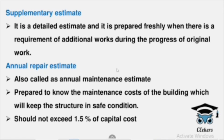Next is the Supplementary Estimate. Supplementary means additional. When work is in progress and we additionally need any work not included in the initial Detailed Estimate, we prepare a Supplementary Estimate. For example, if there is a Retaining Wall in a structure that was not included in the original Detailed Estimate, we need to prepare an additional Supplementary Estimate for that work and get Technical Sanctions.